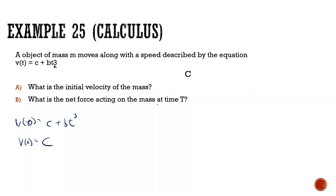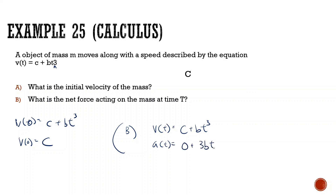What is the net force acting on the mass at time t? The derivative of v(t) = c + bt³ gives acceleration a(t) = 3bt². So net force F(t) = m × 3bt² = 3mbt². We can replace t with capital T: F = 3mbT².